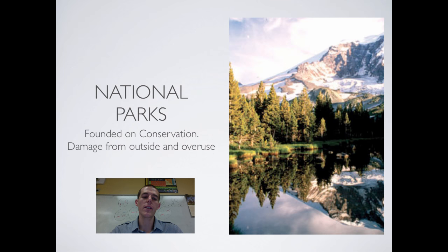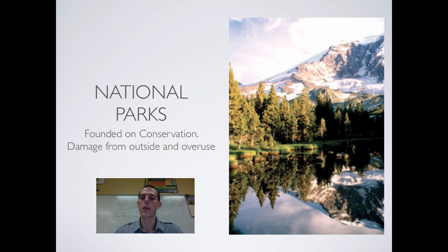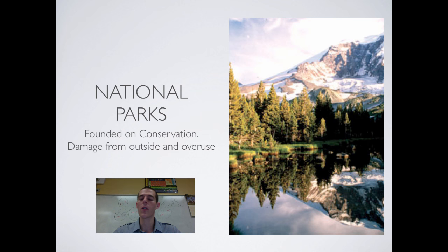Next is national parks. Our national park system was founded on the principle of conservation — these areas were set aside specifically with conservation in mind, and are generally off limits for logging and mining. They do get damaged from outside sources like development around park edges, air pollution, and polluted water flowing through. But really, the biggest damage to national parks is their popularity — overuse by humans brings waste, erosion, and vandalism.